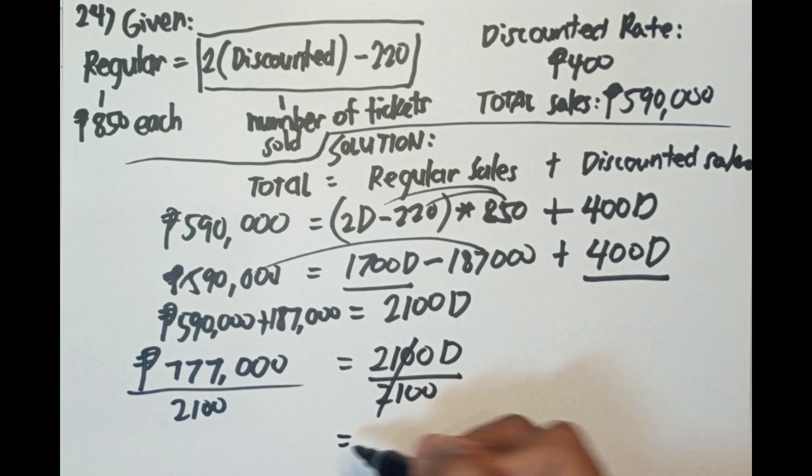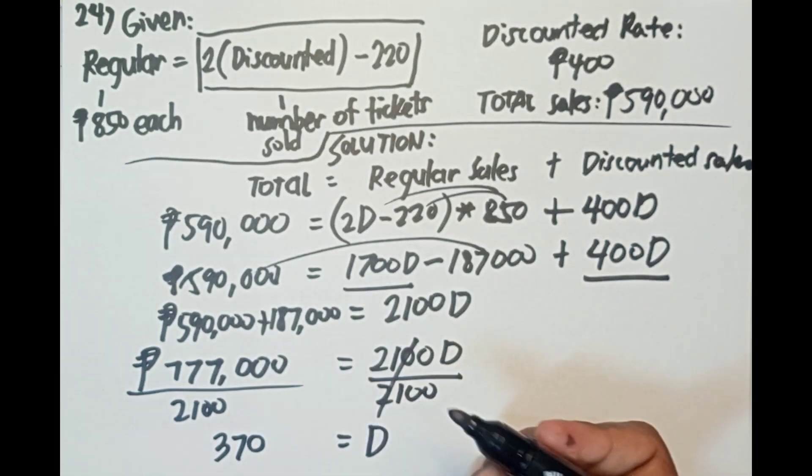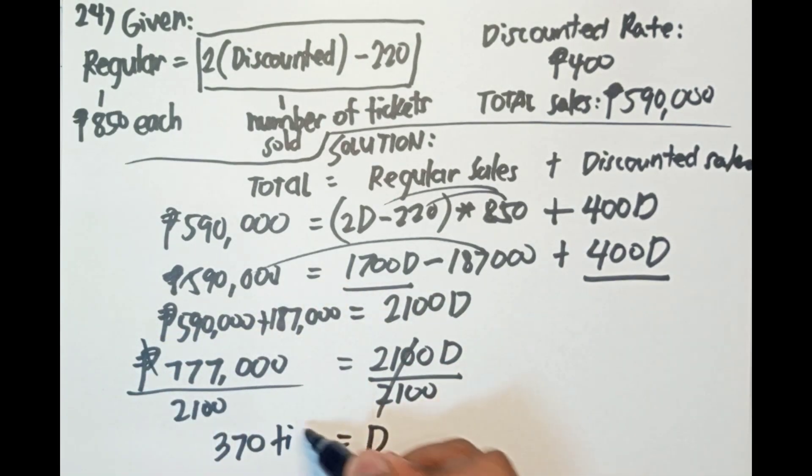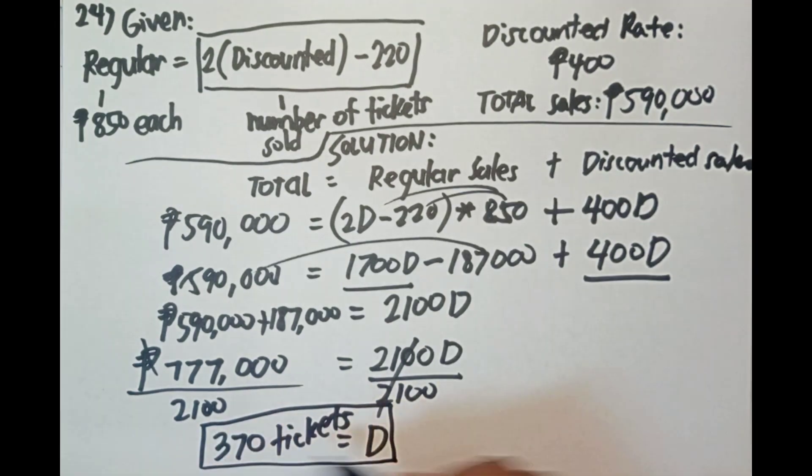Cancel, d equals ilan? 370 tickets. Cancel na ito. 370 tickets. Ang tanong, how many tickets were sold at the discounted rate? So 370 guys. Nakuhan nyo pa guys?